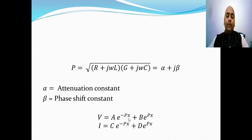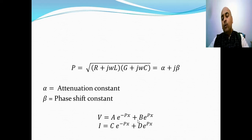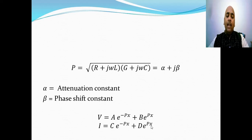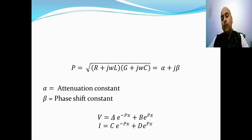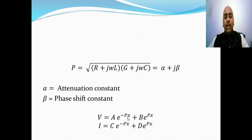By knowing the propagation constant and the distance, we can find the values of voltage once we know constants A and B. Similarly, we can find I using C·e^(−γx) + D·e^(γx). Once a transmission line is given, by calculating the voltages at the input and at the far end, we can determine constants A and B, and similarly C and D, and thereby calculate the voltage or current at any point of the transmission line.